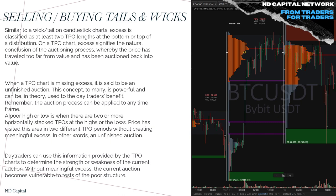Selling tails and buying tails are similar to wicks on a candlestick chart and show whether an auction is completed or not. On a TPO chart, excess — a selling or buying tail — signifies the natural conclusion of an auctioning process: price traveled too far from value, auctioned, and came back. When a TPO chart is missing excess, it's called an unfinished auction, and price will most likely return to that area to finish it. A poor high or low occurs when two or more TPOs are horizontally stacked at the extreme and price has revisited this area without creating meaningful excess.